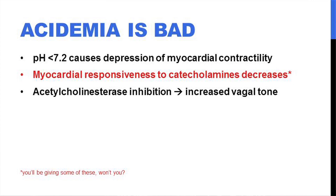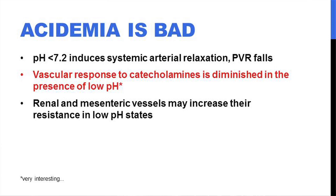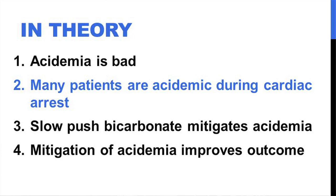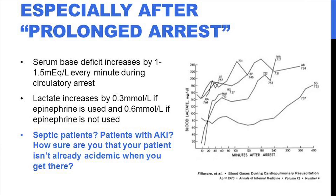Acidemia does very much the same thing on the vascular system: peripheral vascular resistance falls, again with diminished response to catecholamines, although it may actually have the opposite effect on renal and mesenteric vessels, causing gut ischemia and AKI. Many patients are acidemic during cardiac arrest — the graph on the right is from a 1970 study showing blood lactate going up as pH goes down. Base deficit increases every minute during cardiac arrest, and lactate increases more if epinephrine is not being given.